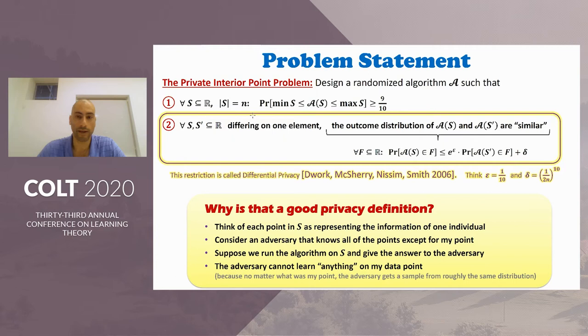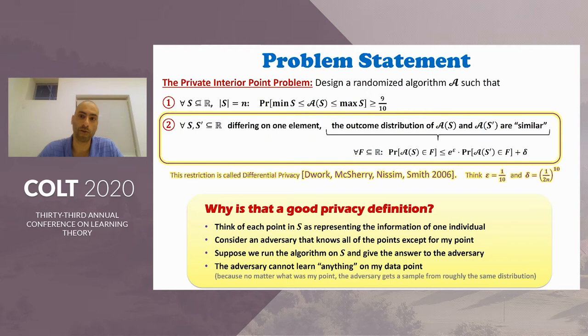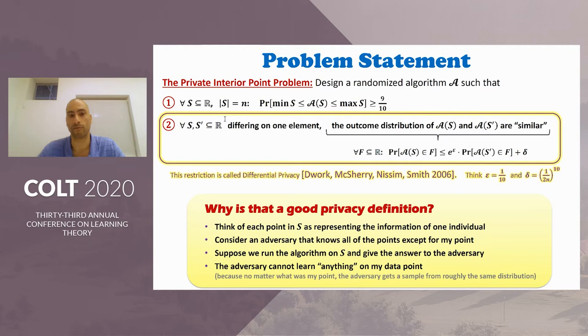Every point in the multiset S represents the data of one individual. Consider an adversary that knows all of the points in S except for my point. We take this multiset S, run algorithm A on it, get an outcome and give it to the adversary. From the adversary's point of view, he cannot learn much about my data point, because no matter what my input point was, he would have seen a sample from roughly the same distribution. So the adversary cannot learn much about my data point by looking at the outcome of the algorithm, even if he knows all of the other data points.